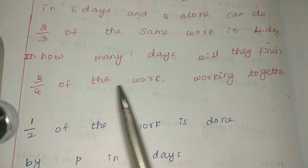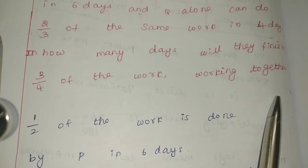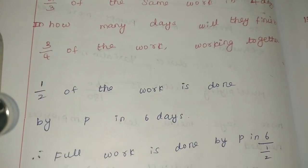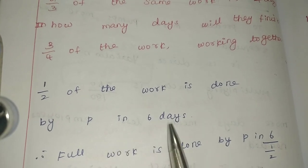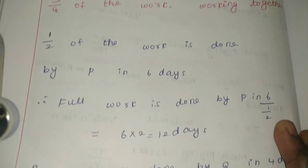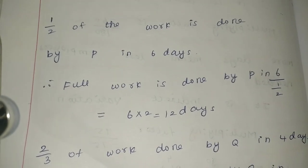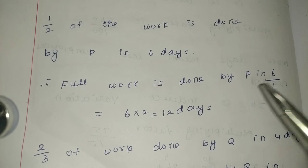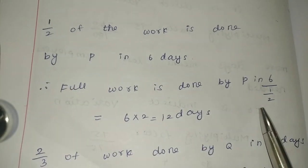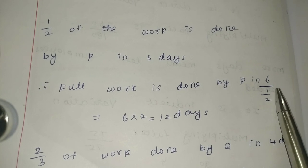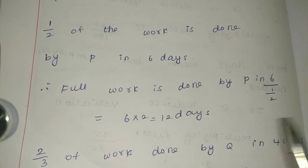P does 1/2 of the work in 6 days. So full work is done by P in 6 divided by 1/2. If you take the reciprocal, that is 6 into 2 by 1, so P does the full work in 12 days.